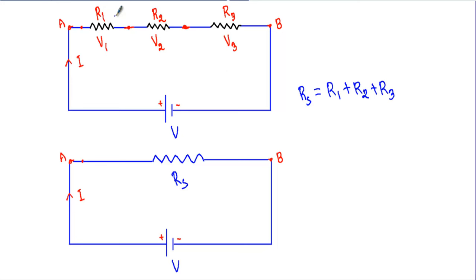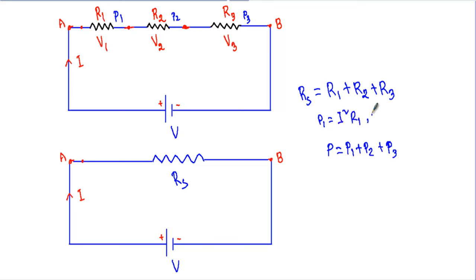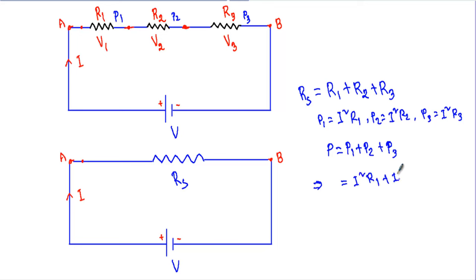If the power drop across R1 is P1, across R2 is P2, and across R3 is P3, then total power P equals P1 plus P2 plus P3. Here P1 equals I squared times R1, P2 equals I squared times R2, P3 equals I squared times R3, and the total power P equals I squared times the total resistance RS. The total power absorbed by the circuit equals the sum of individual power drops across each resistor.